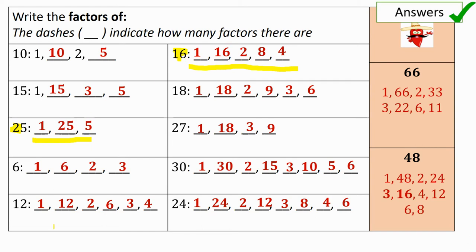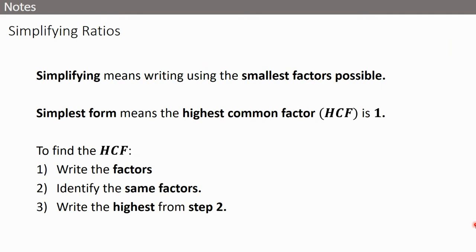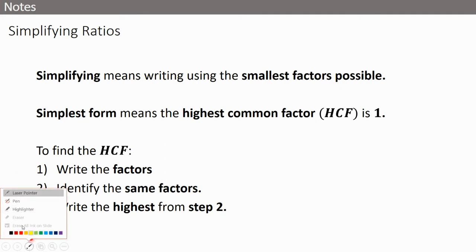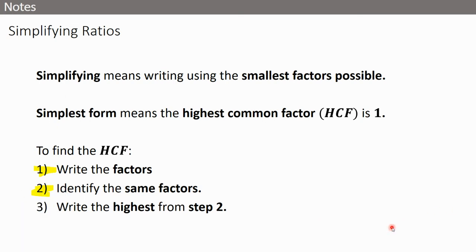25 is a square number - it only has three factors. 16 is a square number - it has five. Square numbers have an odd number of factors; that's something we've spoken about before, so well done if you remembered that. So, simplifying ratios and fractions is the same skill. When you simplify, you're trying to write it with the smallest possible factor. Use the highest common factor to help you. Here are the three steps: write the factors, find the common factors, then write out the highest. If it feels like too much, you can still do it with repeated smaller steps. Pause the video to take any notes.